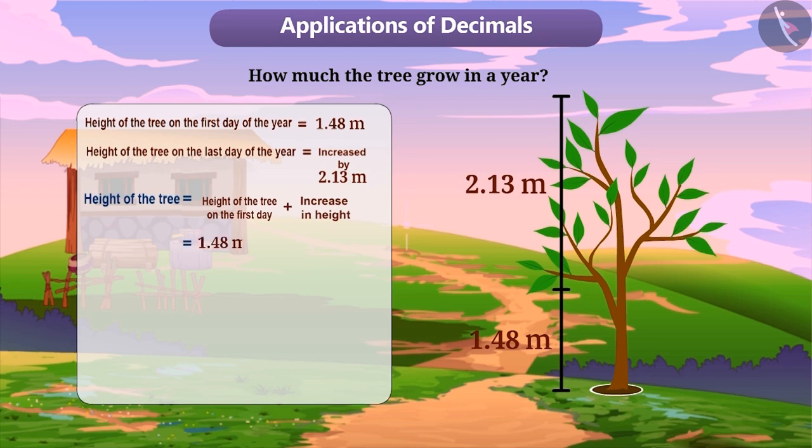That means, height of the tree equals 1.48 metres plus 2.13 metres. To find the answer to this, we will write the decimal numbers one below the other so that the digits in similar places fall in the same column.